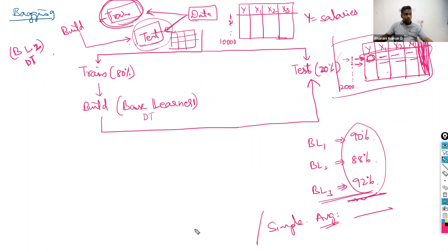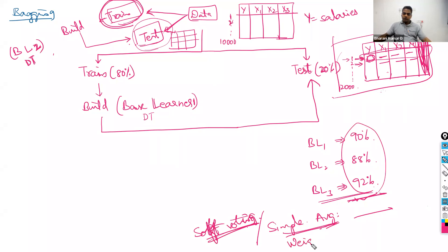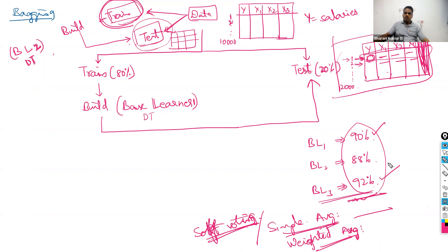Instead of simple averaging, you can proceed with weighted averaging. The algorithm that gives the highest accuracy gets the highest weightage, the next highest accuracy gets slightly less weightage, and the lowest accuracy gets the least weightage. This is calculated using some normalization.